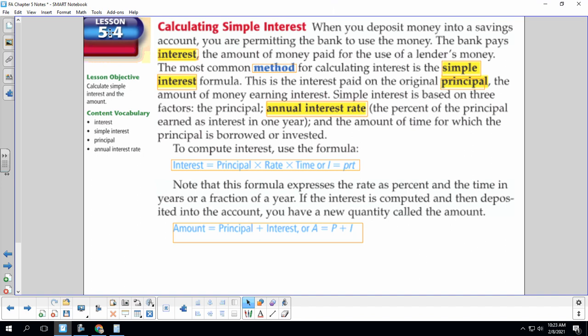This is Chapter 5, Section 4. I'm Mrs. Appelgarth. This is calculating simple interest. When you deposit money into a savings account, you are permitting the bank to use the money. The bank pays interest, the amount of money paid for the use of the lender's money.